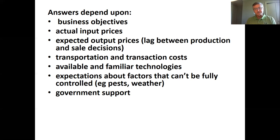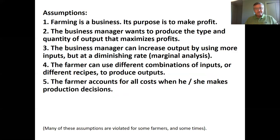What type of government support can you expect if things don't pan out well? Governments are large supporters — about 40% of U.S. farm income this year is from government support. We make assumptions, as we did about the consumer, because we want to predict people's behavior. We assume that farming is a business and the purpose is to make a profit — we can relax that assumption later, but that's the starting assumption. We assume that as they are profit-motivated, they're going to produce the type and quantity of output that maximizes profits.